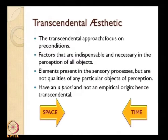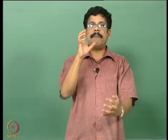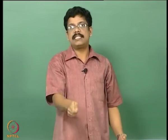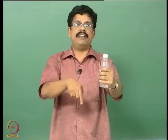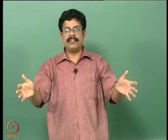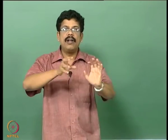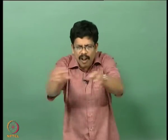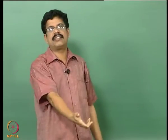Kant introduces two such conditions — space and time — and calls them the forms of sensibility. These are essential conditions for all sensibility. Every object, the moment we perceive it, we perceive it in a particular space and a particular time. For example, this water bottle is here in my hand at this moment now. This whole sense of time and place cannot be separated from the process of understanding; sensibility cannot be detached from this spatio-temporal organization. You cannot abstract it away and conceive of this bottle existing outside space and time.